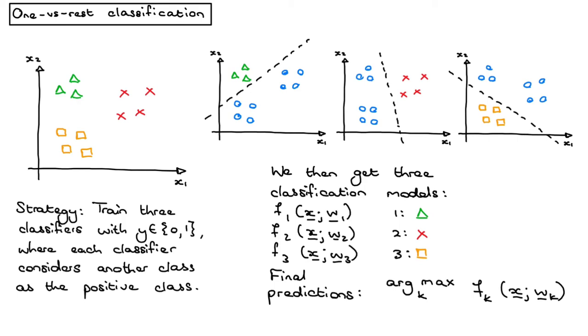Then at test time, you're given a new input x, and what you do is pass it through the first model, the second model, and the third model, and you get an output score—you can think of it as a probability.